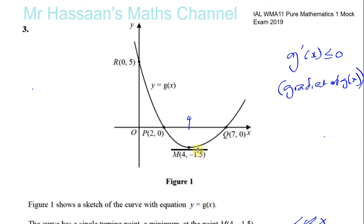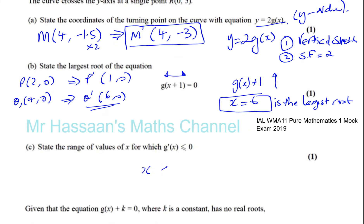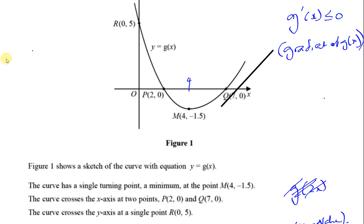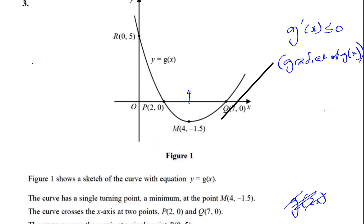For values of X greater than 4, the gradient starts becoming positive — you can see that. So the gradient is negative when X is less than 4, and equal to 0 when X equals 4. Therefore the range of values for which the gradient is less than or equal to 0 is X ≤ 4. The gradient is less than 0 when X < 4, and the gradient equals 0 when X = 4.